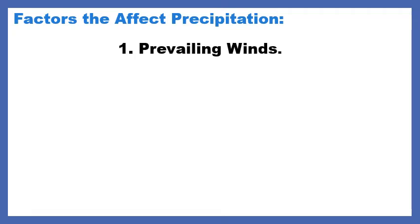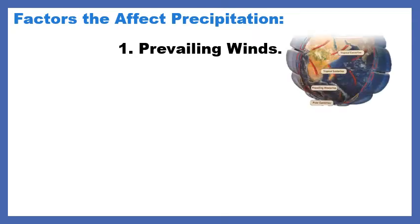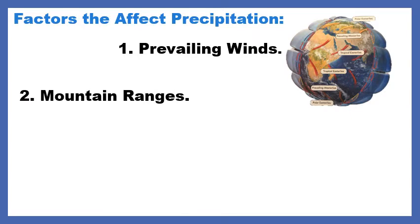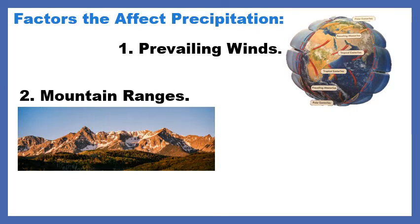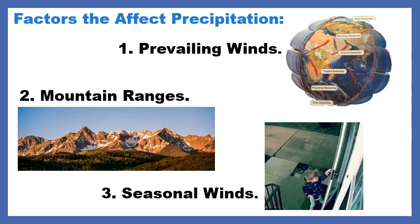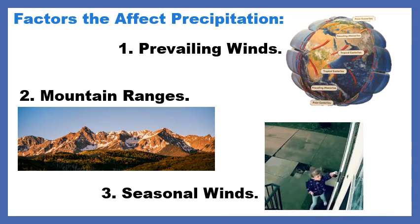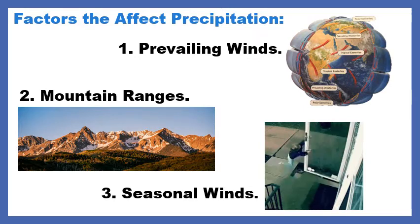We're going to learn about three factors that affect precipitation or rain. Number one is prevailing winds — those are winds that blow long distances across the globe. Number two is mountain ranges, which are just a group of mountains together. And number three is seasonal winds. There's a funny gif here of a little girl being blown away by the wind.